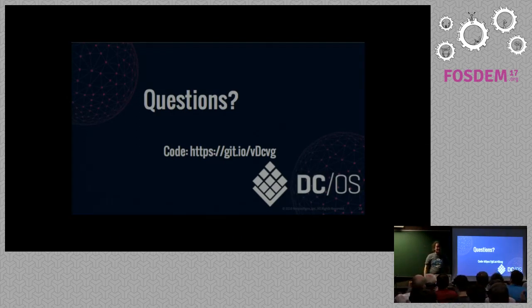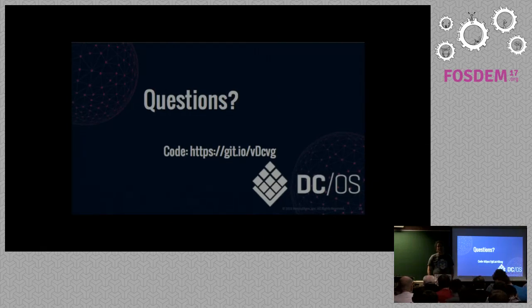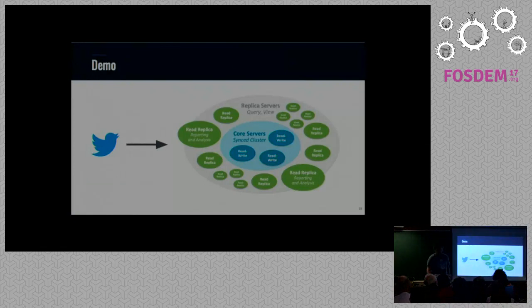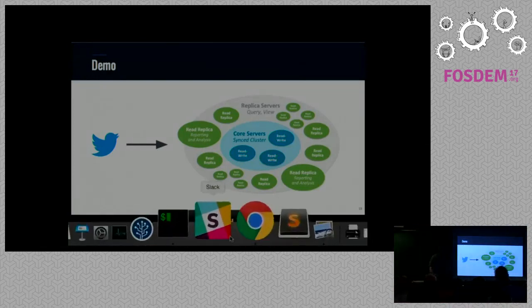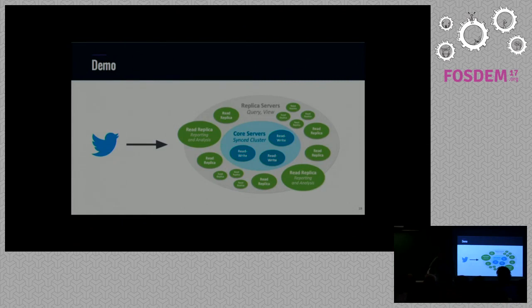Q&A: A question about Neo4j 3.1 having two types of clustering and why only one was presented. The answer is that only causal clustering is shown because the setup of the cluster, recovery, causal routing, and so on — only causal clustering is the way forward going forward, as the older HA clustering will go away.